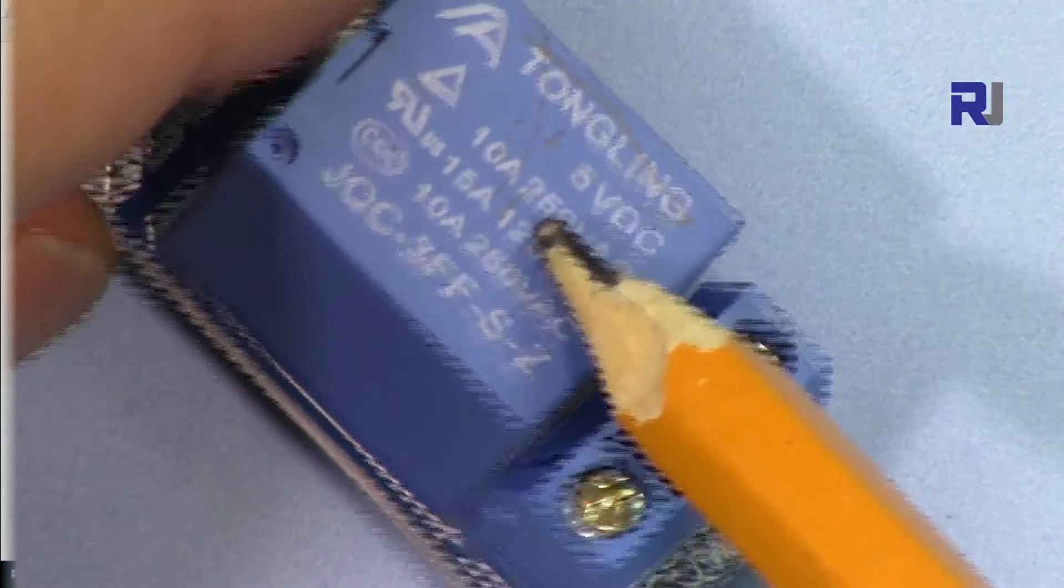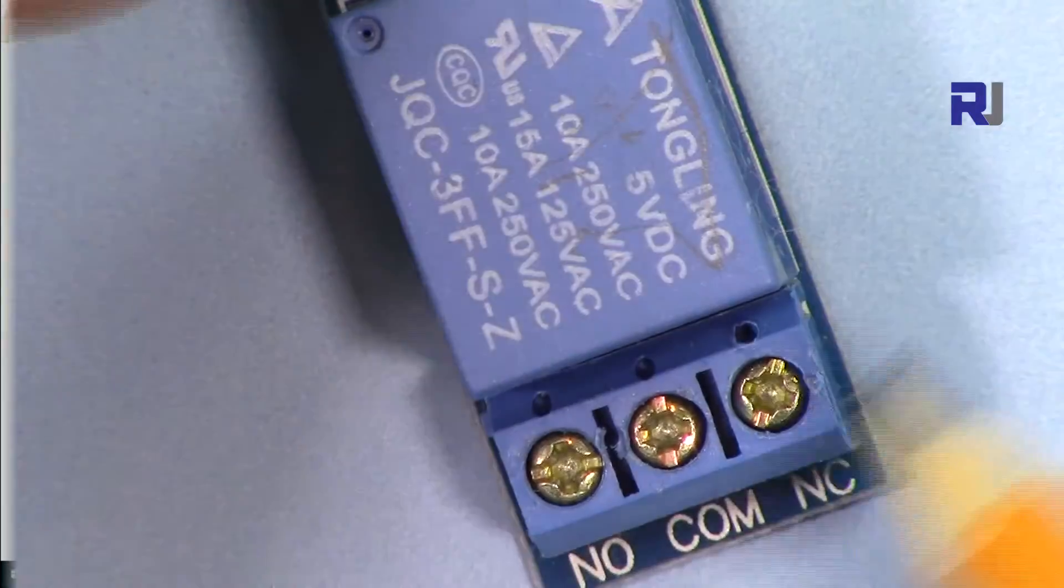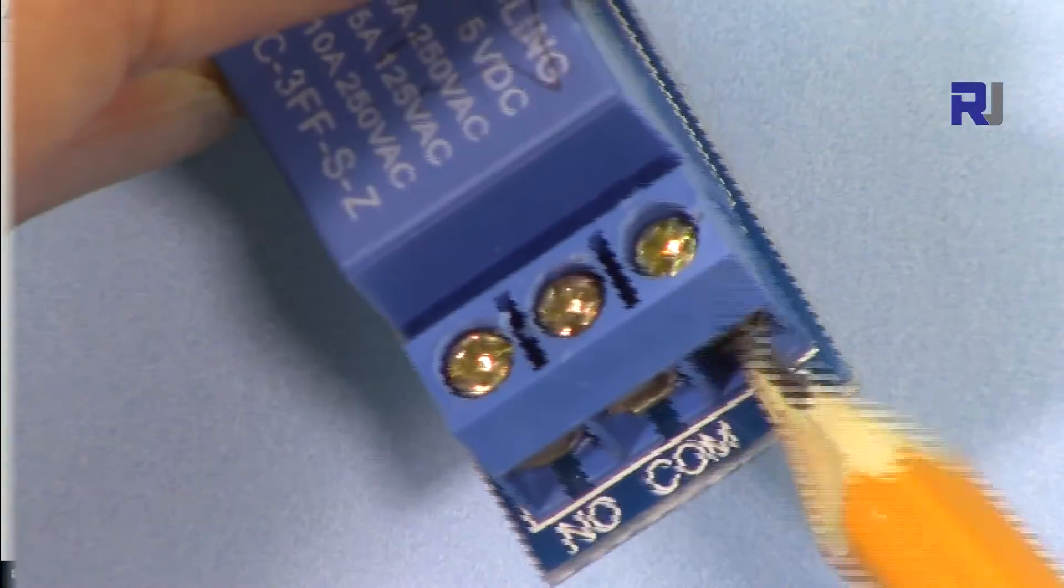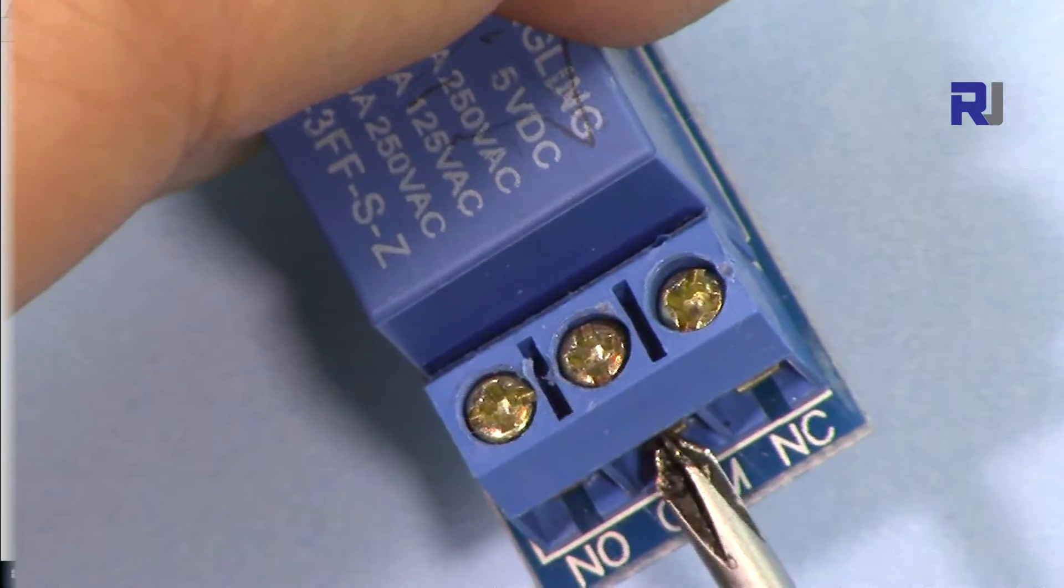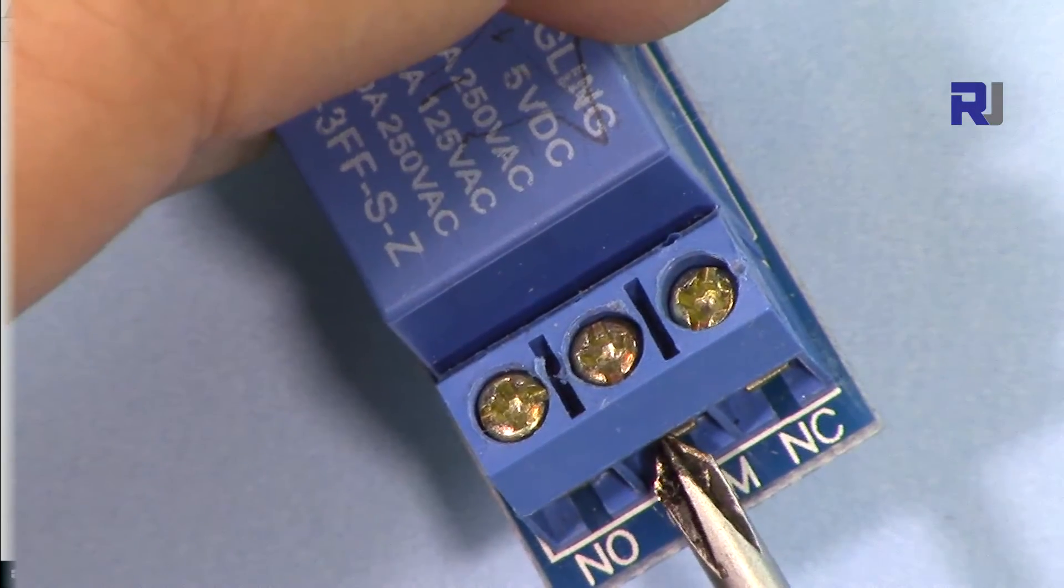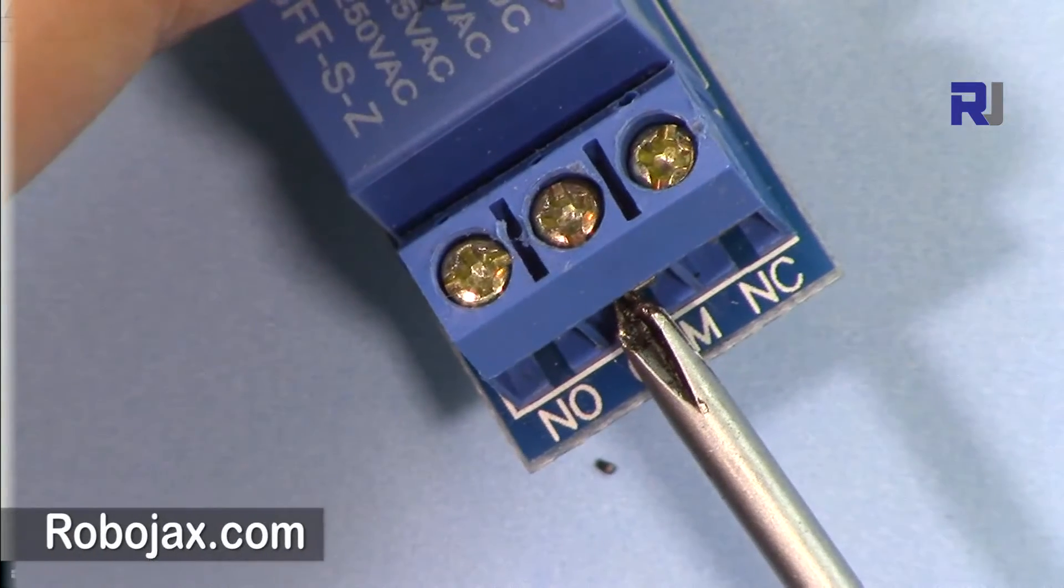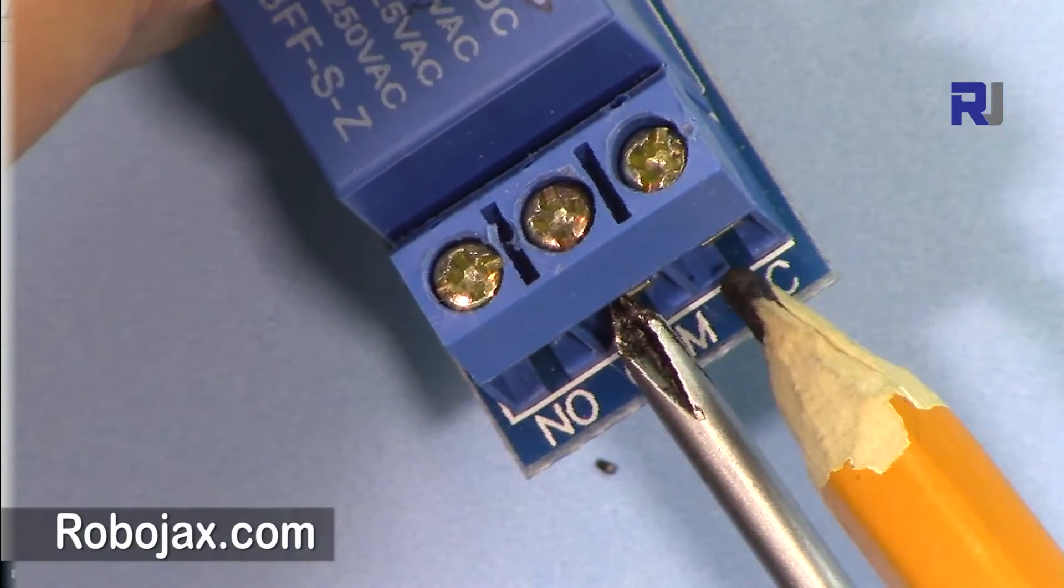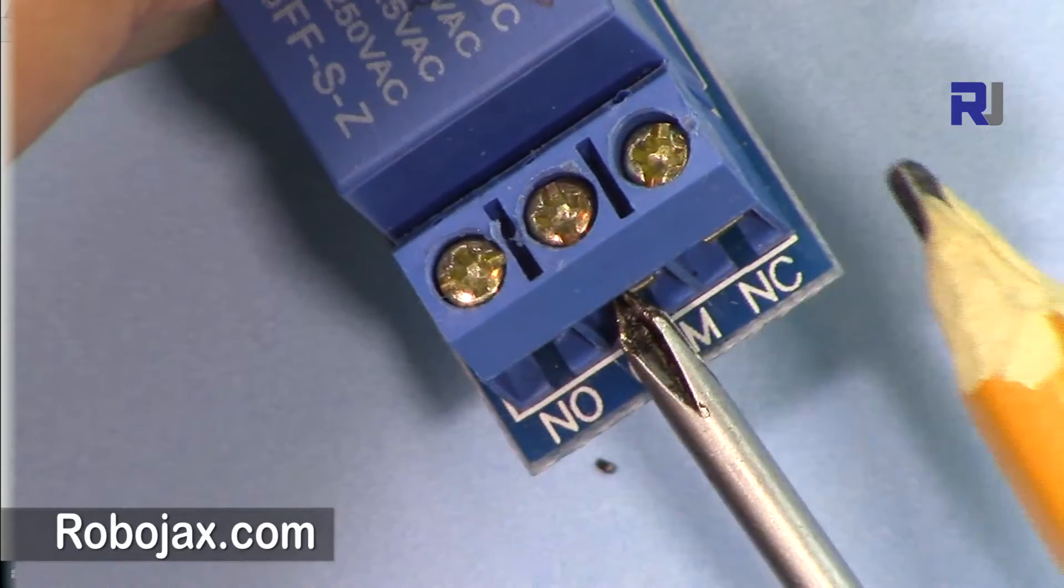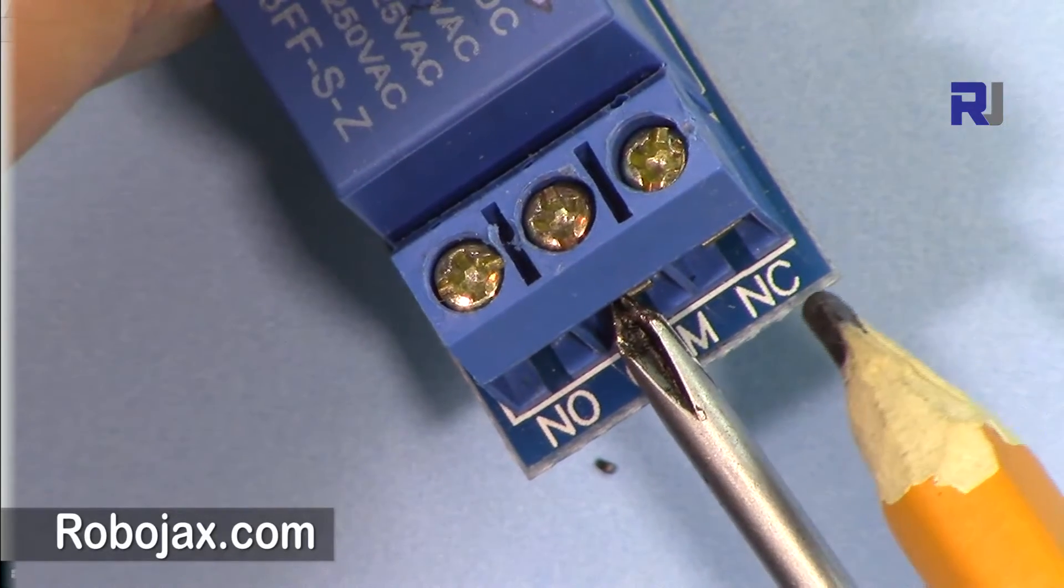Let me explain the relay now. The relay is 5 volts so it doesn't need other external power, it can be powered with Arduino. We have three connections here. This is common, so you always connect one of the wires to AC or DC, whatever - heaters, light, whatever. You connect the light here, one of them, and the other one will be either connected here or here depending on the application.